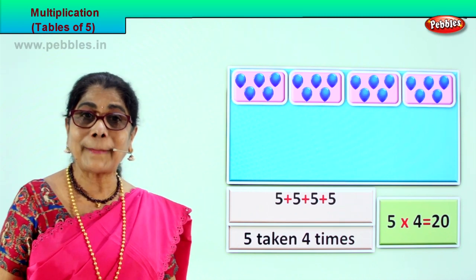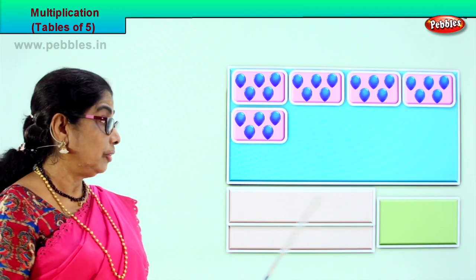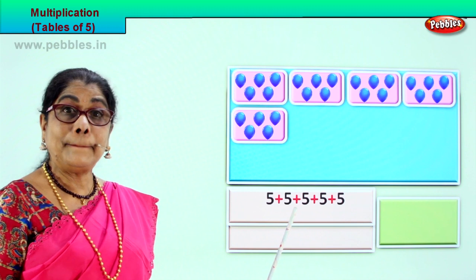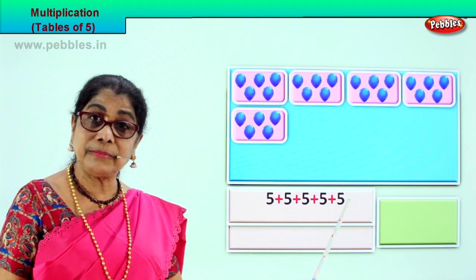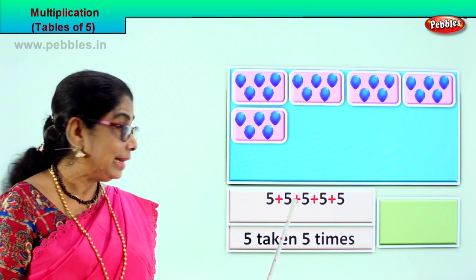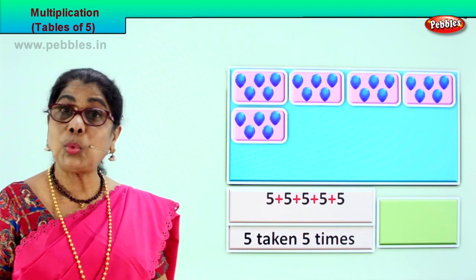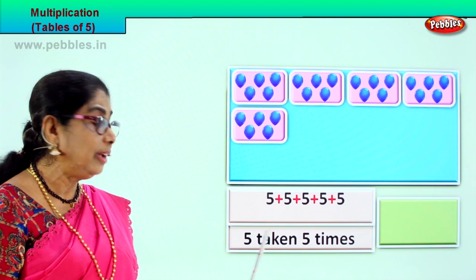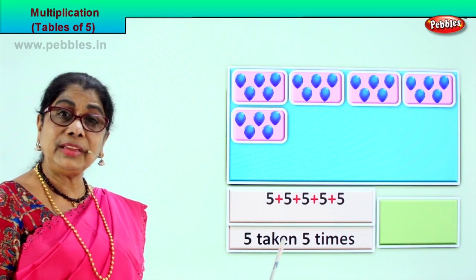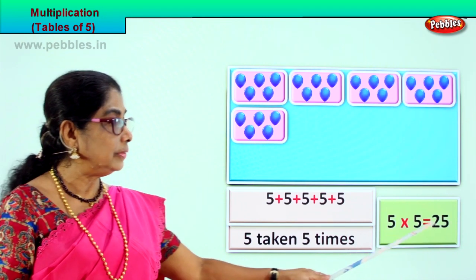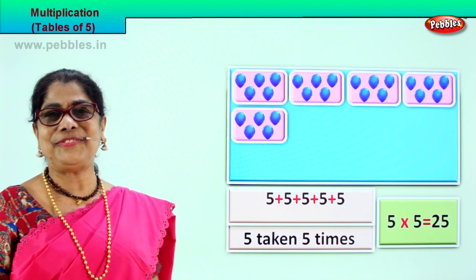Shall we take another grouping of five? One, two, three, four, five. You have five groups of five. Multiplication is repeated addition, so we add five five times. Five plus five is ten, plus five is fifteen, plus five is twenty, plus five is twenty-five. Five into five is equal to twenty-five. Five fives are twenty-five. Good.